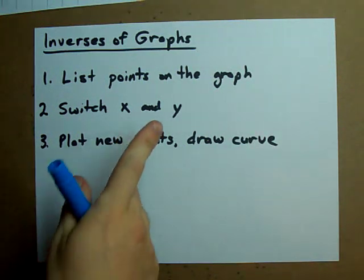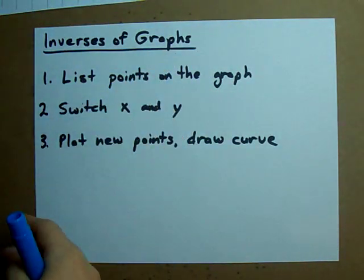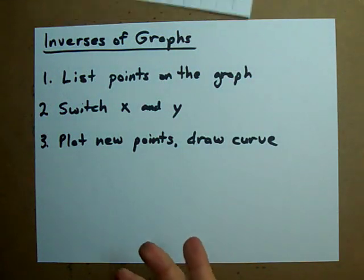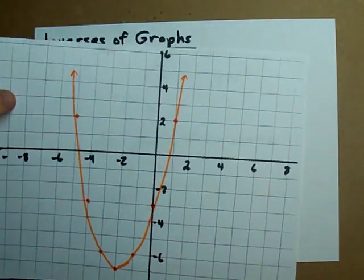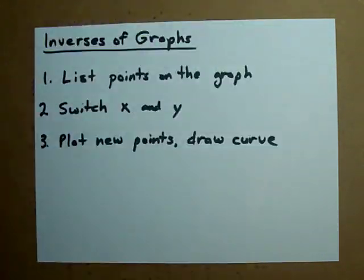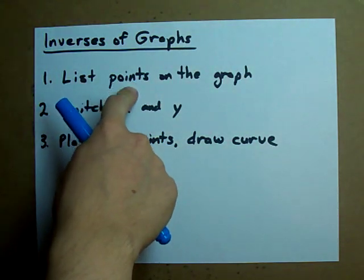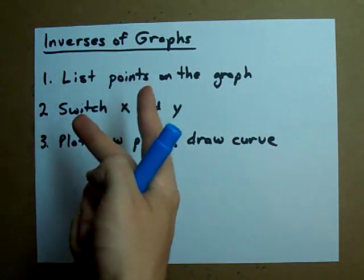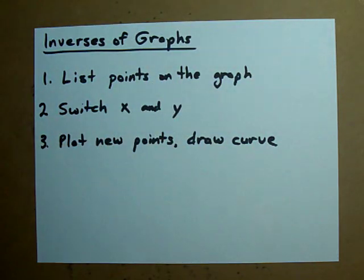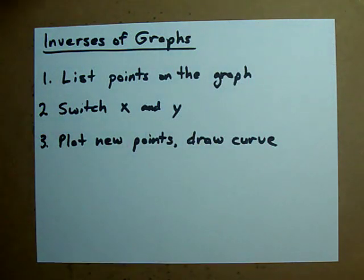You may be given a graph and asked to find the inverse of it. Here's a graph — let's find the inverse of it. You're going to list any of the points that you see on the graph, then switch the x and the y in each of those points, plot those new points, and draw your curve through them.